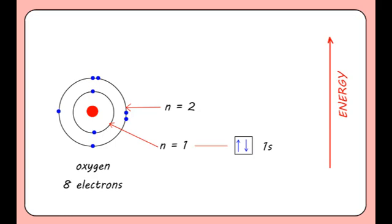We represent the spins of electrons with the arrows. The next shell, n equals two, is made up of a single S orbital and three P orbitals.